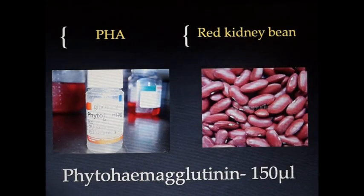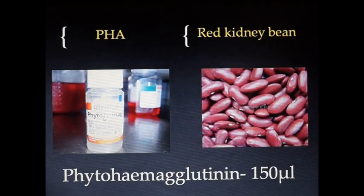RPMI 1640 is used for lymphocyte culture of peripheral blood. Around 5 ml of RPMI is taken to a test tube. Then we have to add to the same test tube PHA. PHA is phytohemagglutinin. Phytohemagglutinin is extracted from red kidney beans or French beans. Around 150 microliters of phytohemagglutinin is added to the culture tube. Why we are adding PHA? It is actually to increase the cell division. It is a mitogenic agent which increases the mitosis.